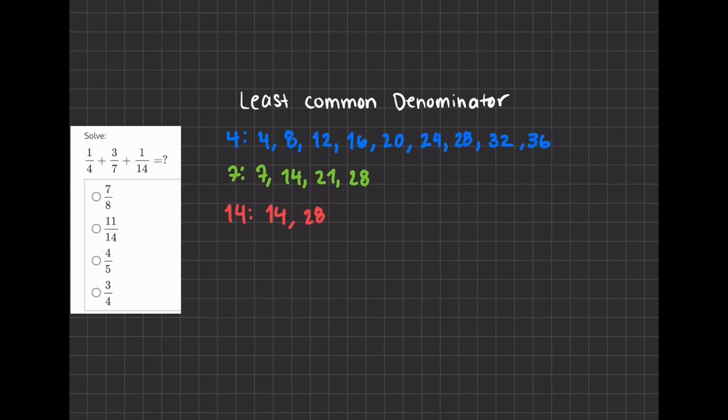Now I've listed all the multiples, or most of the multiples, of 4, 7, and 14, and I stopped once I realized that 28 is the common denominator between them.